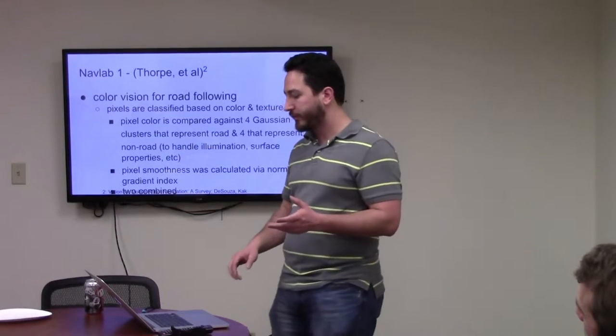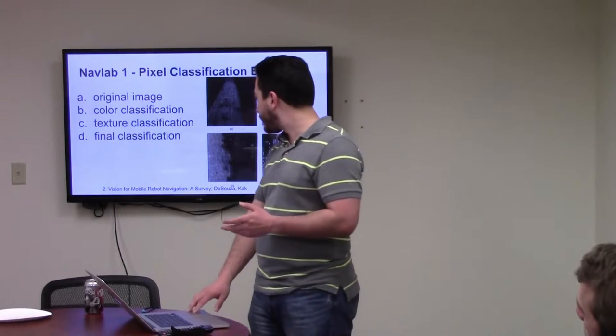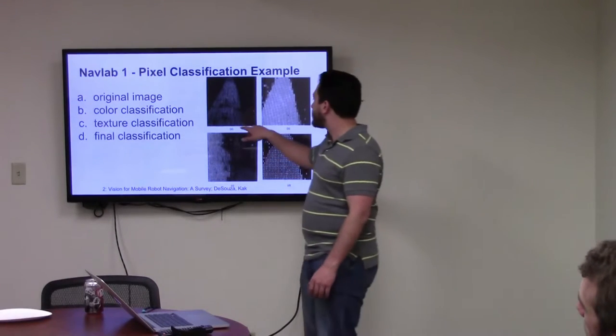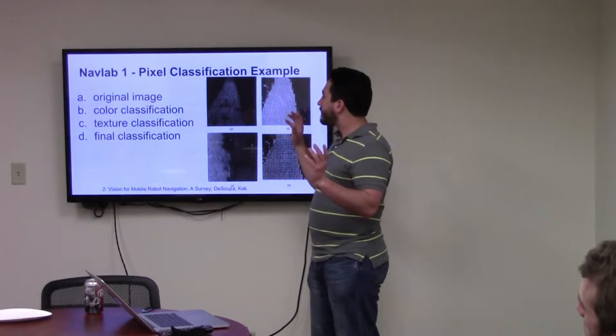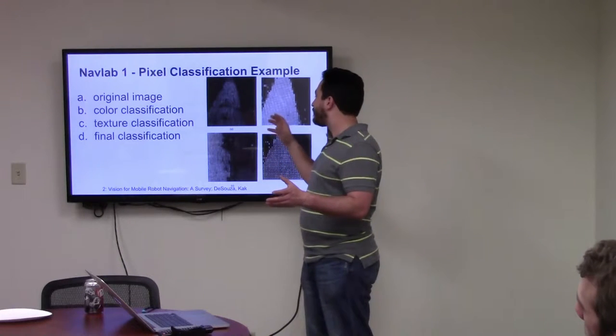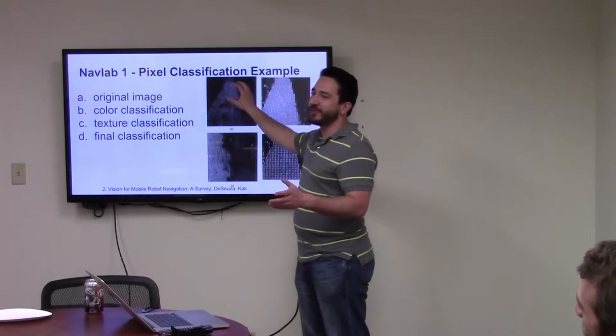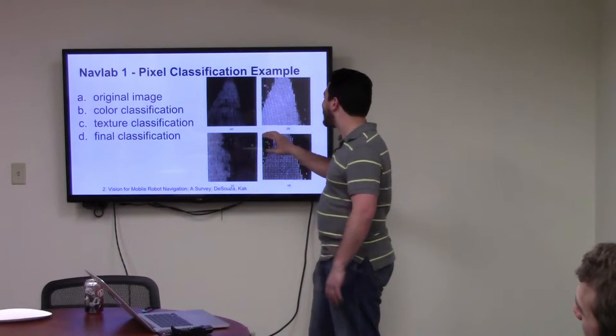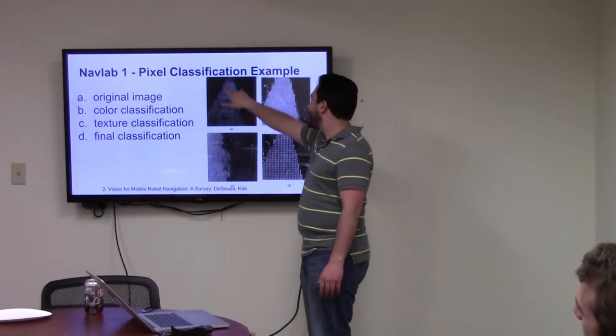And then they would go through and they had some predefined expectation as to what a road looked like in terms of how cracked up it was, how much the texture changed. And they just plot that. And that actually worked pretty well. I think they got the vehicle up to like 30 miles per hour. But you can get an idea of what this stuff looked like. So this was the original image.